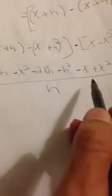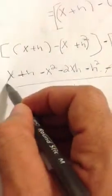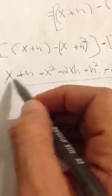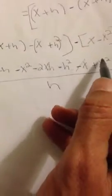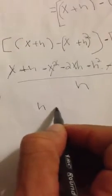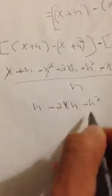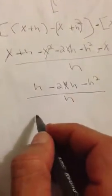Now let's simplify. The negative x and positive x cancel out. The positive x squared and negative x squared cancel out. We're left with h minus 2xh minus h squared, all over h.